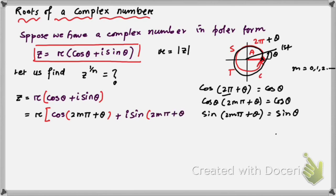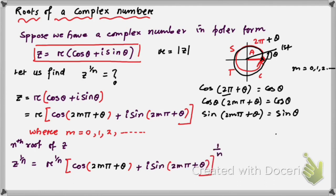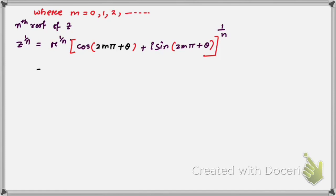Here m = 0, 1, 2, 3, and so on. To find the nth root of z, we take z to the power 1/n on both sides. Applying this, we get the expression: z^(1/n) = r^(1/n) [cos(2mπ + θ) + i sin(2mπ + θ)]^(1/n).